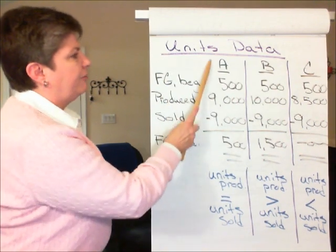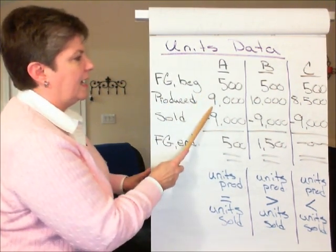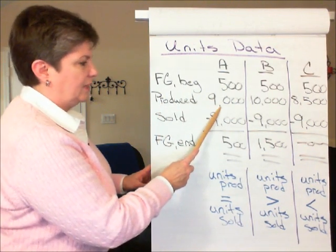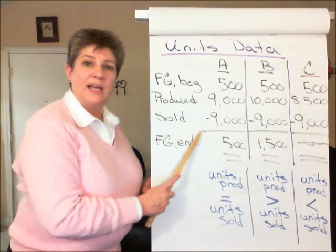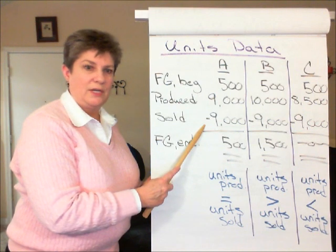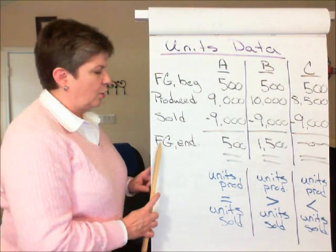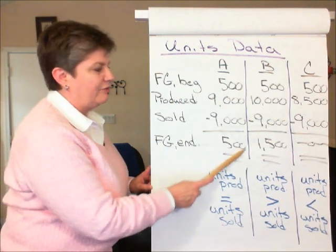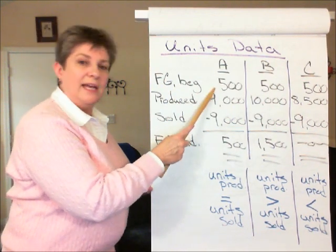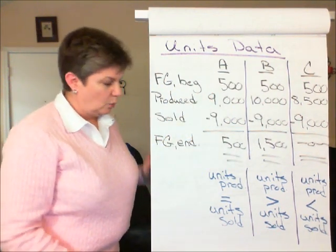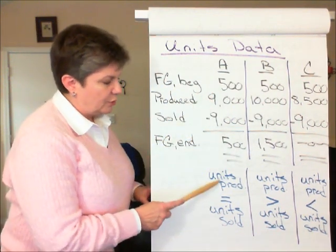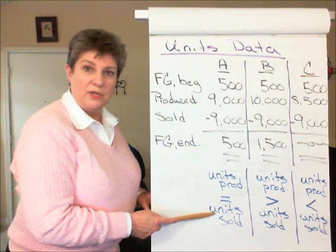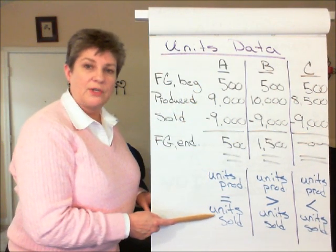In the first scenario, Scenario A, we produce 9,000 units and we also sell 9,000 units. So the finished goods ending inventory is 500 units, just as the beginning inventory was. The units produced in Scenario A equals the number of units sold.